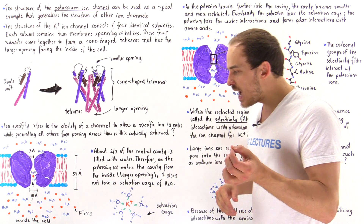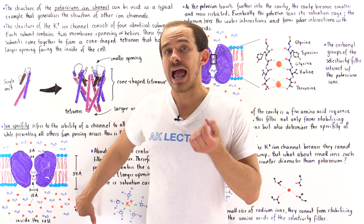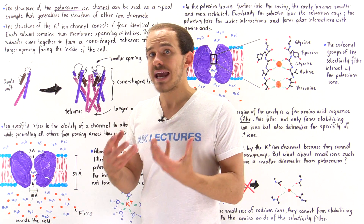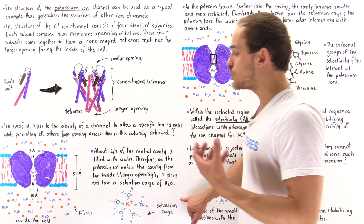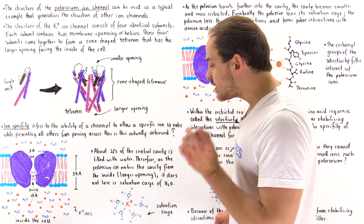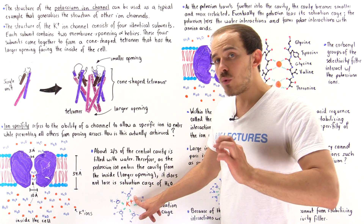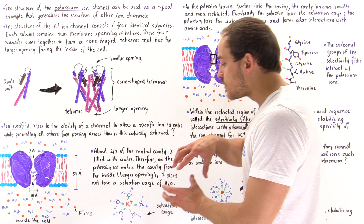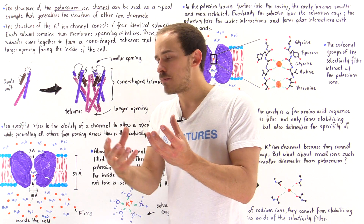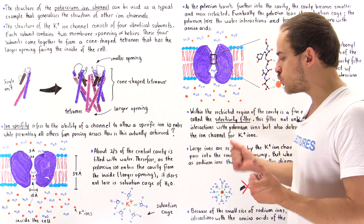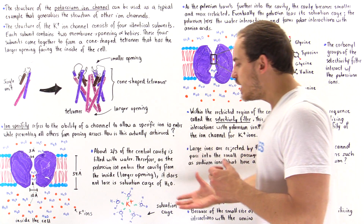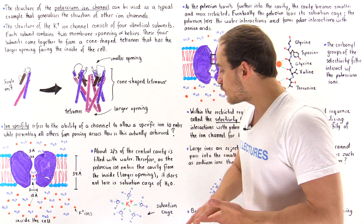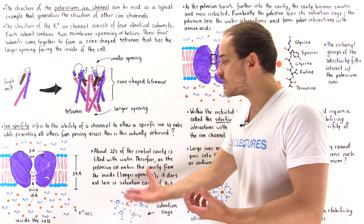The potassium ions actually interact with the water molecules to form a more stable structure. This interaction creates what is known as the solvation cage, or solvation shell. The full positive charge on the potassium ions interacts with the partially negative charges on the oxygen atoms of the water molecules, orienting those water molecules around the potassium to form a cage. This solvation cage creates an energetically more stable, lower-energy system, because the formation of these bonds releases energy.